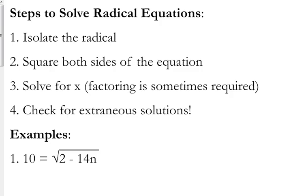The opposite of taking the square root of something is squaring it. So once we isolate that radical, we're going to square both sides of the equation. We're going to solve for x — sometimes that does require factoring. And always, always, always check your answers, because sometimes you get extraneous solutions where you get an answer but when you throw it back in, it doesn't satisfy the equation.